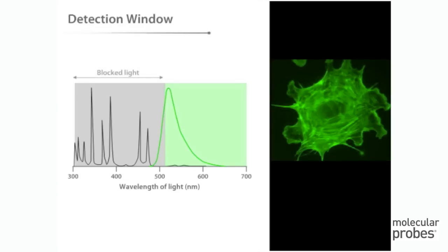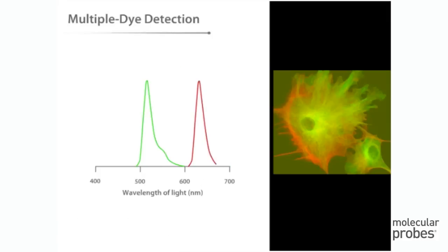When a single dye is used, a filter that blocks out the excitation light to reduce background noise but transmits everything else is often a good choice to maximize the signal collected. Such a filter is called a long-pass emission filter. If multiple dyes are used in the sample, a band-pass emission filter can be used to isolate the emission from each dye.